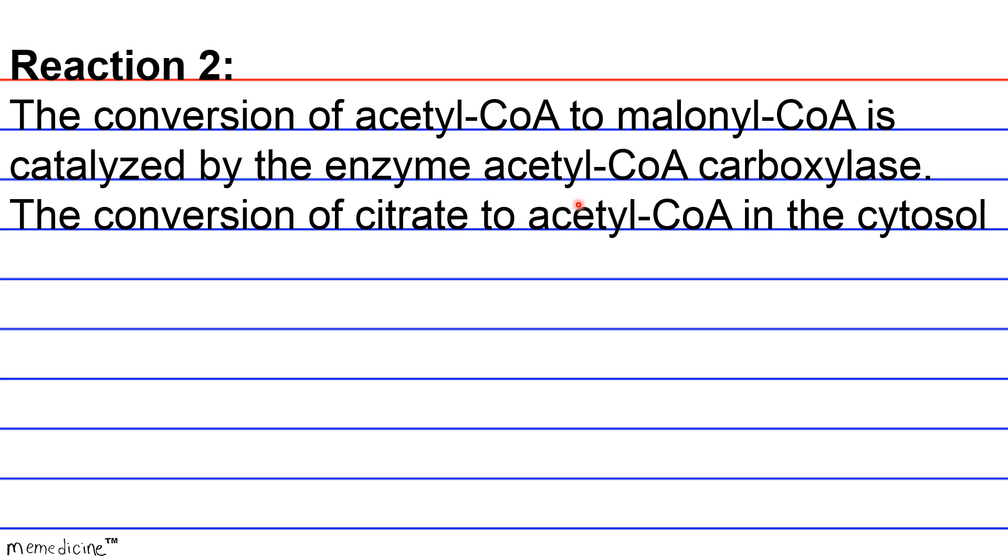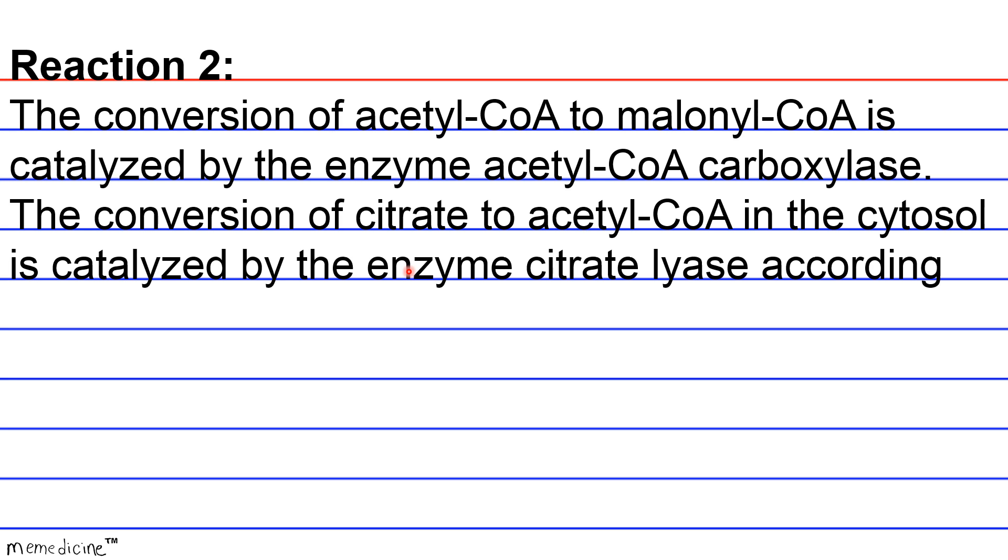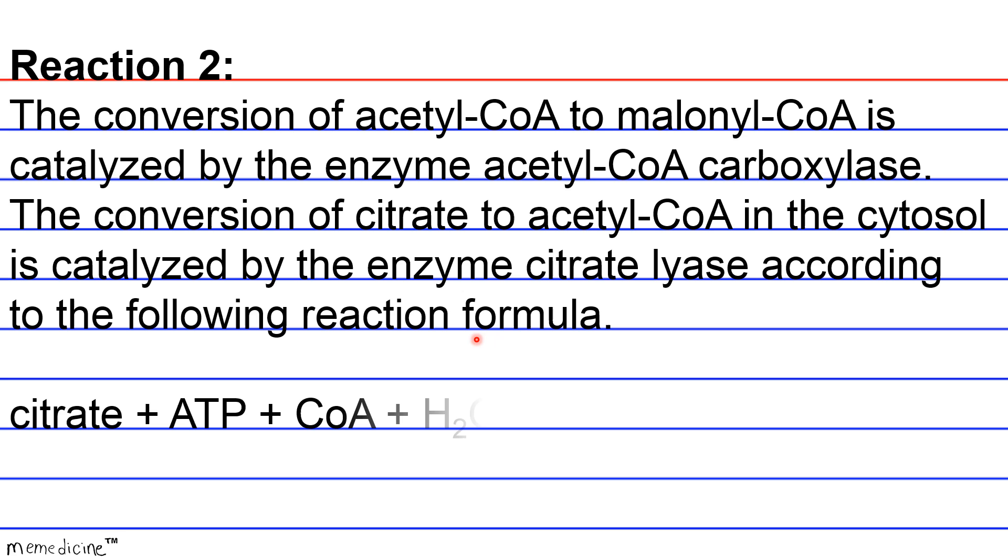Now, on to the next one. The conversion of citrate to acetyl-CoA in the cytosol—so this is citrate coming out of the TCA cycle, the tricarboxylic acid cycle in the mitochondria. Now you're reconverting it back to its previous state in the cytosol. I'm not sure why the body decides to do it this way. God made it that way. So it's catalyzed by the enzyme citrate lyase, according to the following reaction formula: citrate plus ATP plus CoA plus H2O is going to yield oxaloacetate plus acetyl-CoA plus ADP and a phosphate group.